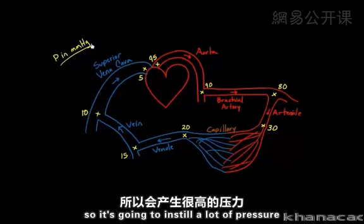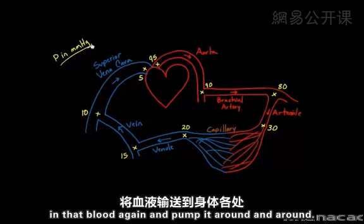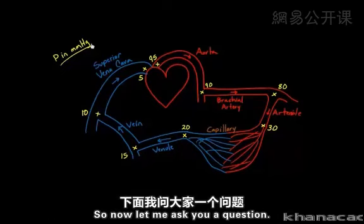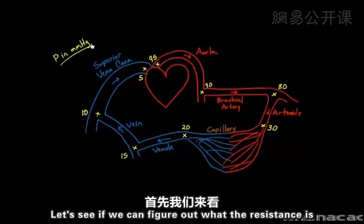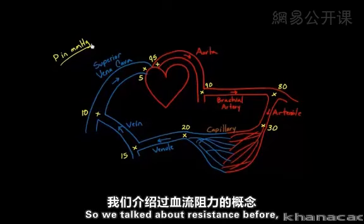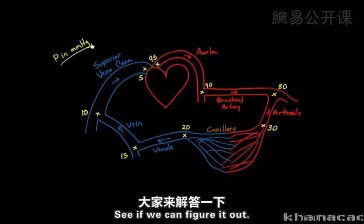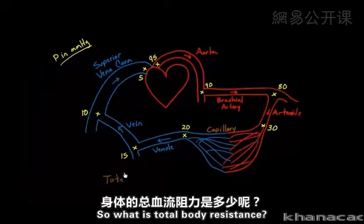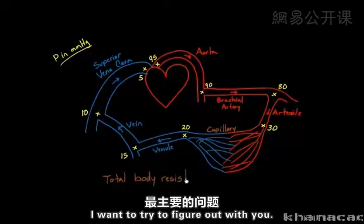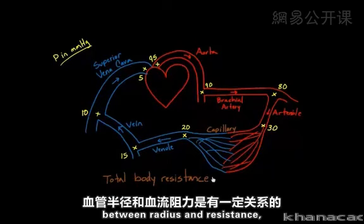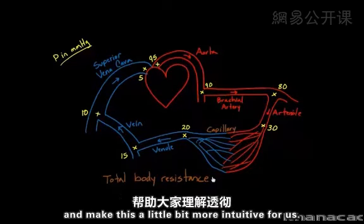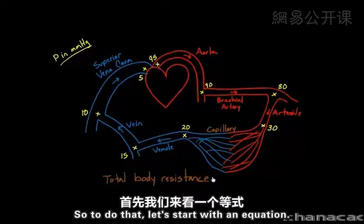The heart is a pump, so it reinstills a lot of pressure in the blood and pumps it around, which is what keeps the blood flowing in one direction. Now let me pose a question: can we figure out what the resistance is in all the vessels of the body combined? We talked about resistance before in terms of radius, but let's make this more intuitive.